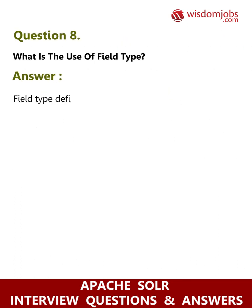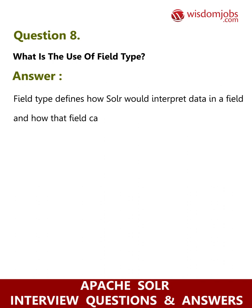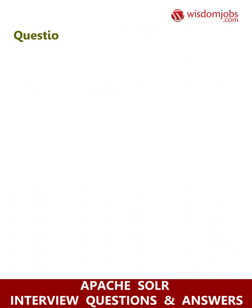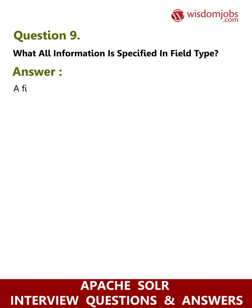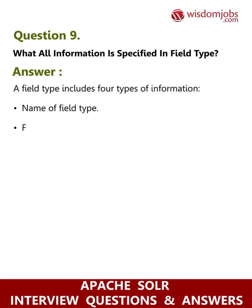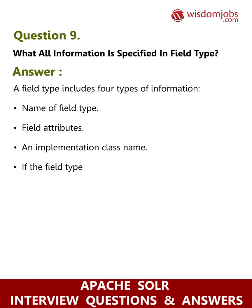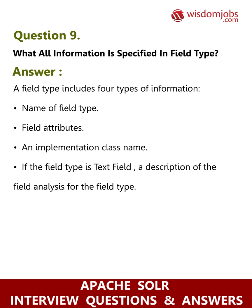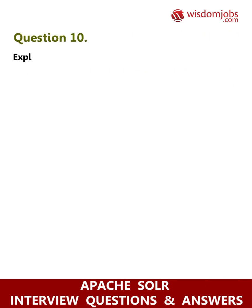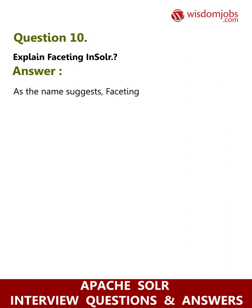Question 8: What is the use of field type? Answer: Field type defines how Solr would interpret data in a field and how that field can be queried. Question 9: What information is specified in a field type? Answer: A field type includes four types of information: name of the field type, field attributes, an implementation class name, and if the field type is a text field, a description of the field analysis for the field type.